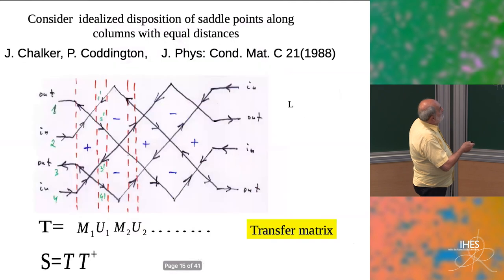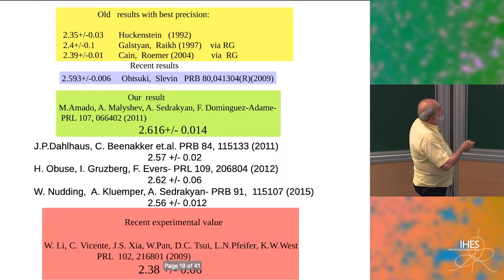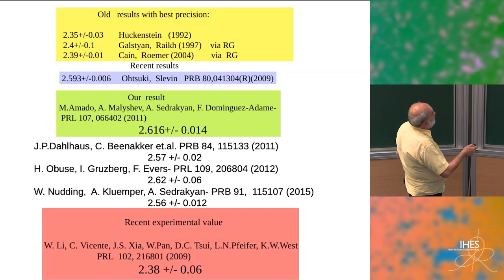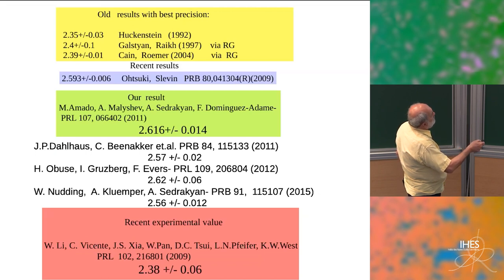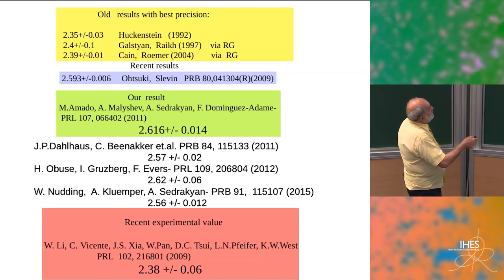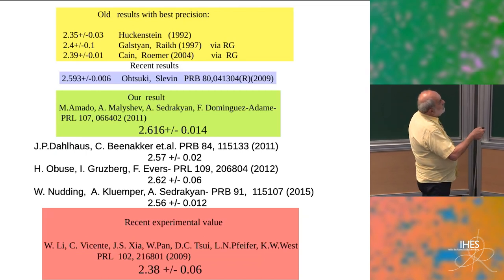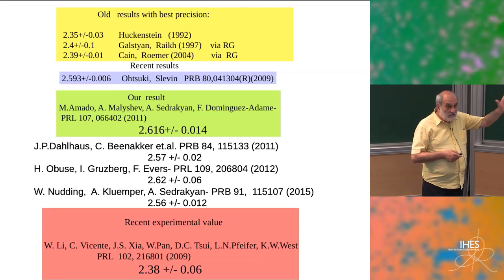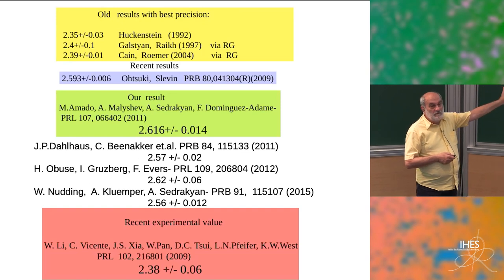The comparison gives the following result: numerical calculations show ν ≈ 2.6. But the experimental value measured by the Wei group in 2009 gives 2.38. It's quite far from the model — this model cannot describe the plateau transition. What's the problem? The regular disposition of saddle points: that was the hypothesis, and it's not good.